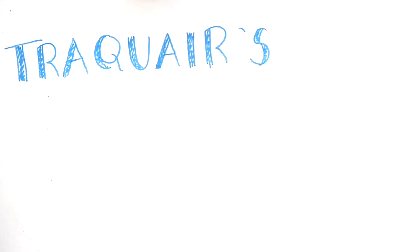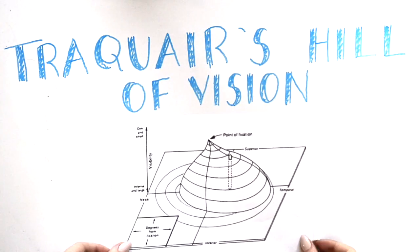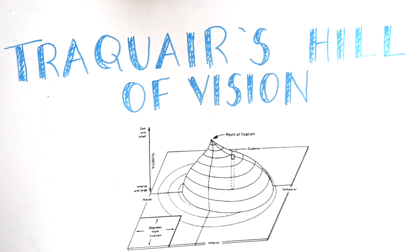Jaquai's hill of vision is made up of multiple isopters to show the sensitivity of the retina. The closer you go to the fovea, the more sensitive the retina, therefore the peak.